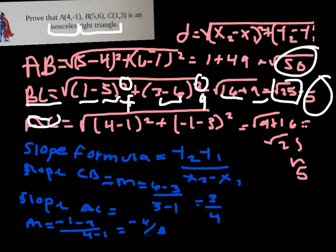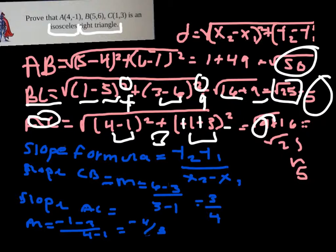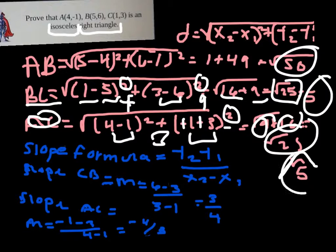The same thing for AC. 4 minus 1 equals 3, which squared equals 9. Then negative 1 minus 3 equals negative 4, which squared equals 16. Adding them gives 25, and the square root of 25 equals 5.